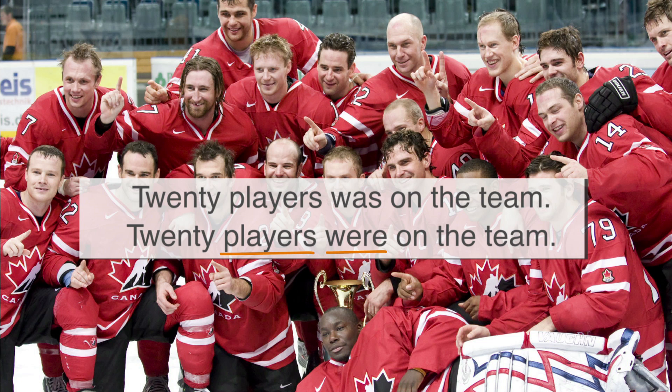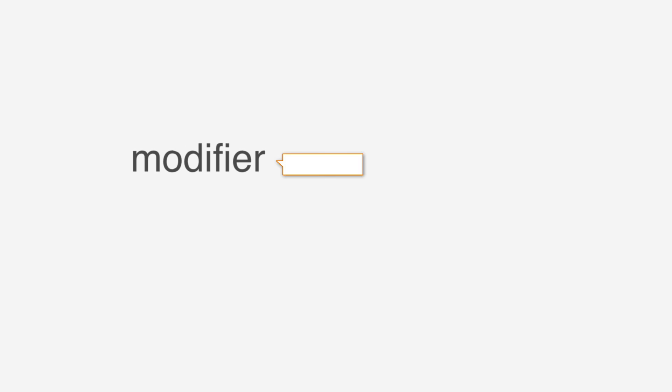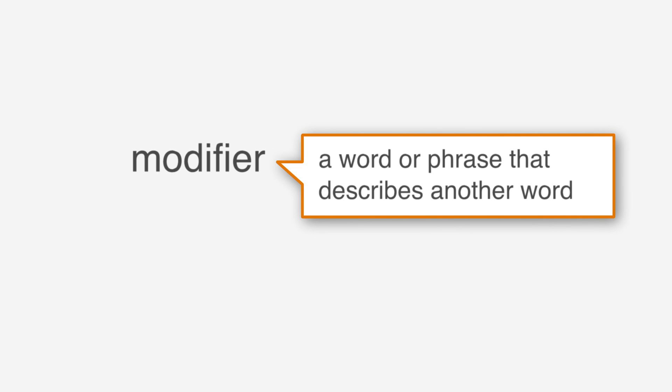In this example, it was easy to identify the subject players. But it's not always this simple, because strategically placed modifiers can make it difficult to find the subject. A modifier is a word or phrase that describes another word. Keep in mind that subjects won't occur within modifiers.